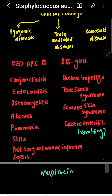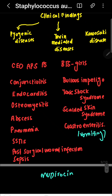A useful mnemonic for pyogenic diseases is 'CO of APS program for schooling': conjunctivitis, endocarditis, osteomyelitis, abscess, pneumonia, SSTIs (skin and soft tissue infections), post-surgical wound infection, and sepsis.